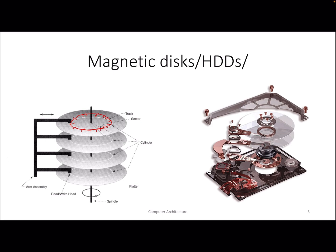The sector is the atomic unit at which data gets transferred from your storage device into DRAM — for example, when you get a page fault, or when you load a movie from your hard disk and play it on your laptop. There is a notion of tracks, which are multiple concentric circles on two sides of the platter.